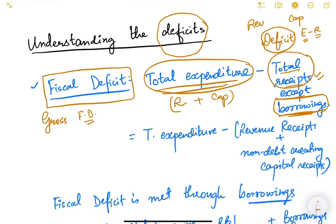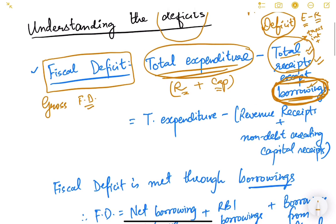For example, receipts include revenue receipts like tax payments and interest payments, and there can also be capital receipts — for example, if the government is selling a PSU or some other asset, the proceeds are also considered here. Only borrowings are left out. So fiscal deficit or gross fiscal deficit equals total expenditure (revenue plus capital) minus total revenue receipts plus non-debt creating capital receipts.